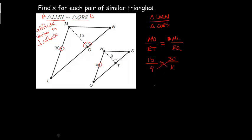So I'm going to do my cross multiply, so I'm going to have 15x. 9 times 30 is 270. And then I'm going to divide both sides by 15, so I can find x. So 270 divided by 15 is going to give me 18. So this x equals 18.